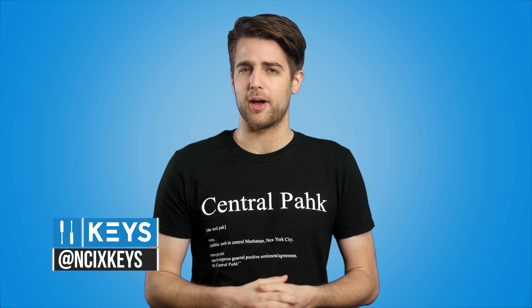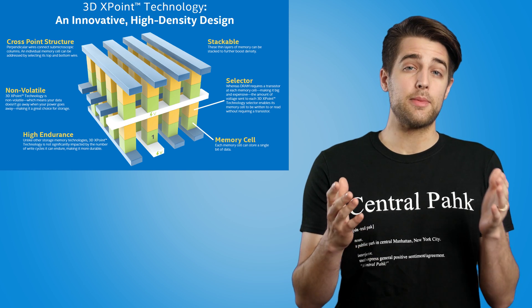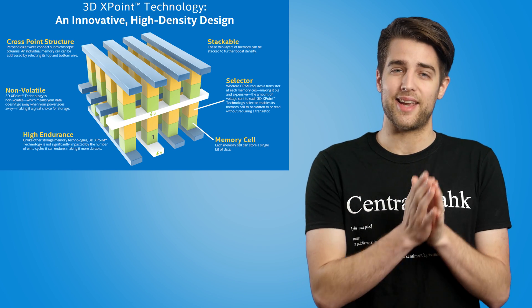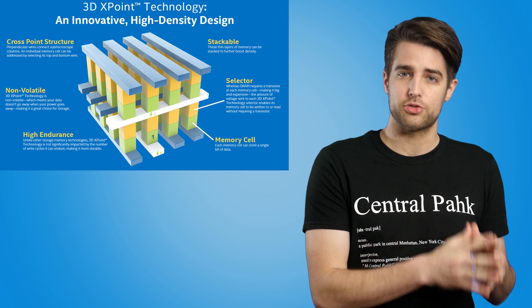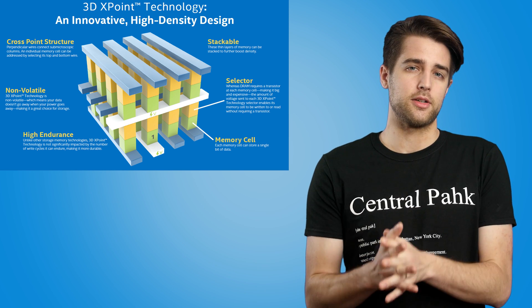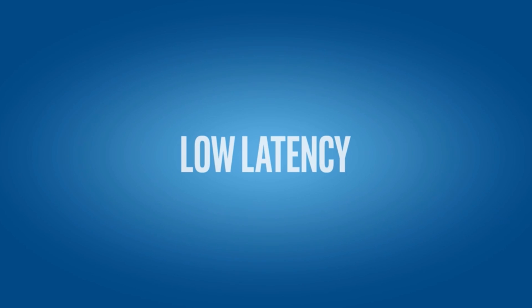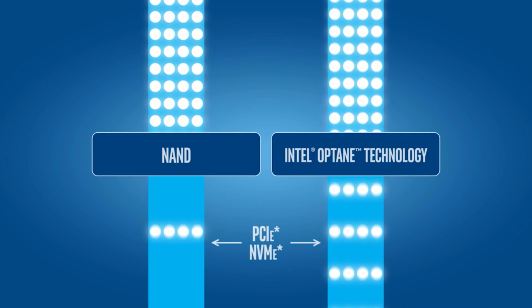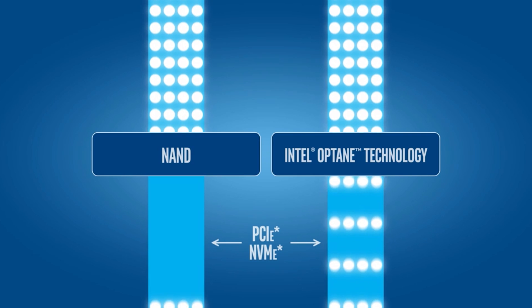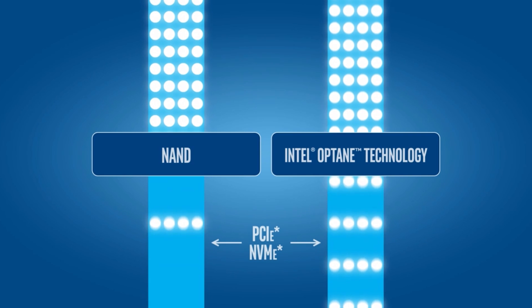What is 3D Crosspoint anyway, and what's so revolutionary about it? Like the name implies, 3D Crosspoint uses a three-dimensional structure with columns of memory material connected by horizontal wires. Its design allows 3D Crosspoint to pack more memory into less space and reach speeds hundreds of times faster than NAND flash, with much lower latency.